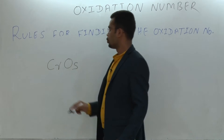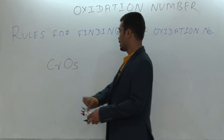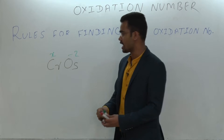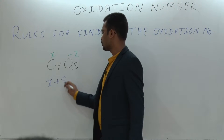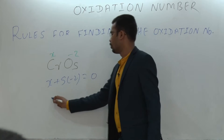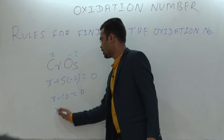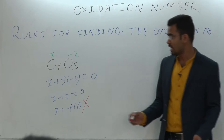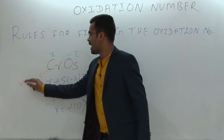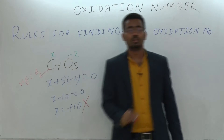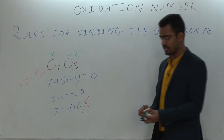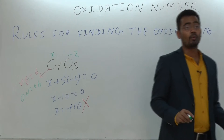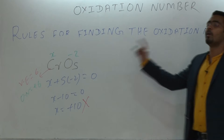Now consider CrO₅. When we calculate, assuming oxygen is −2 and chromium is x, for a neutral compound: x + 5×(−2) = 0, giving x − 10 = 0, so x = +10, which is wrong. Because for chromium the valence electrons are 6, the oxidation number cannot be more than 6. Therefore the oxidation number of chromium is +6.